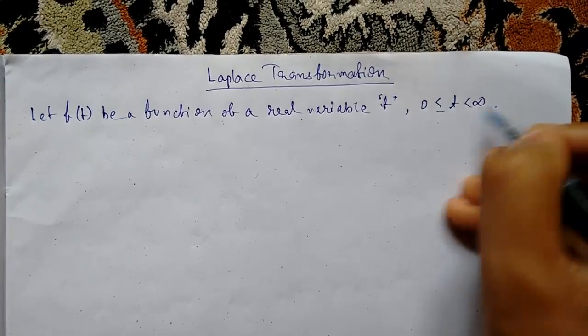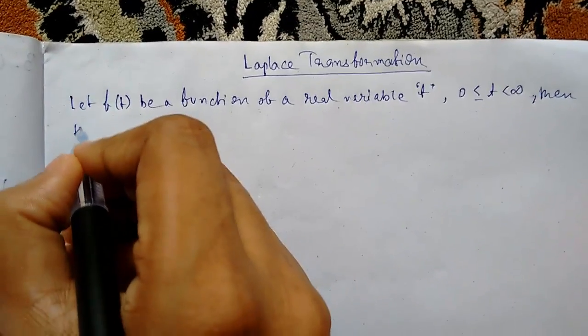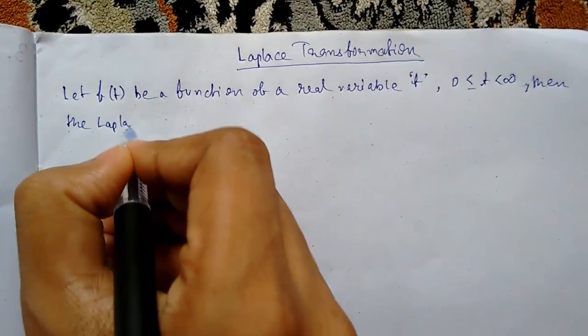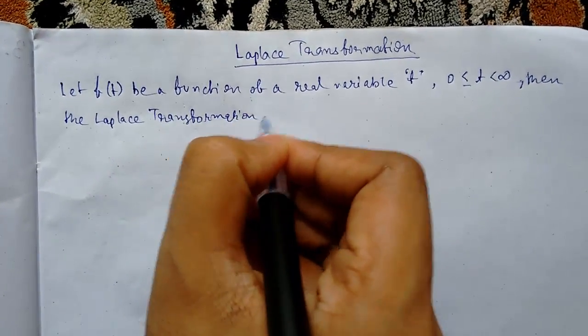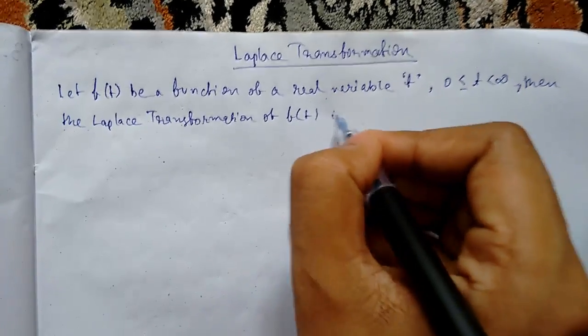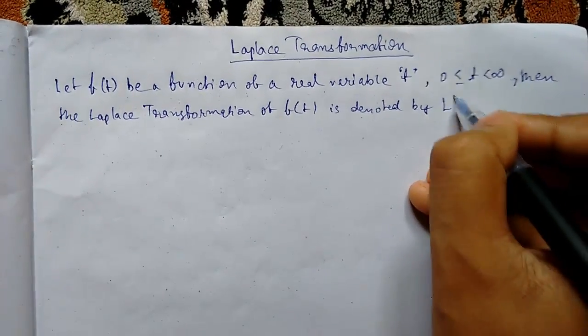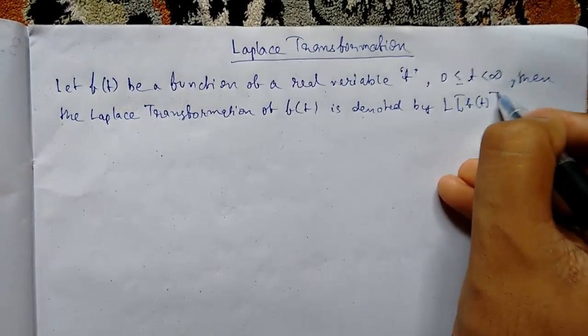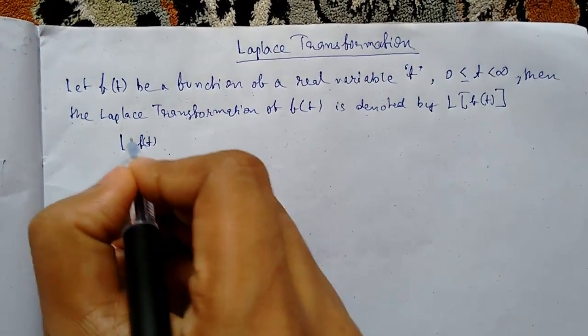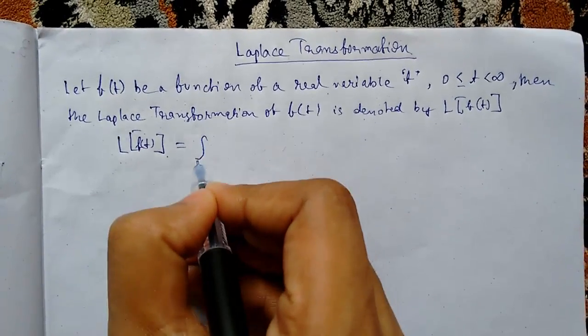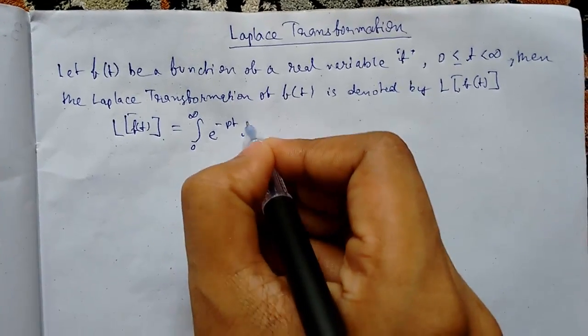And from less than t greater than 0 and less than infinity, then the Laplace transformation of f(t) is denoted by L within third bracket f(t), and it is defined by L of f(t) equals from 0 to infinity e to the power minus pt f(t) dt.